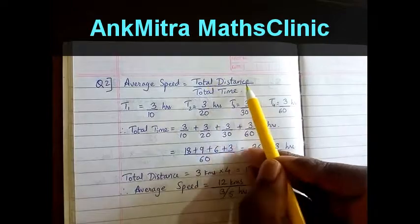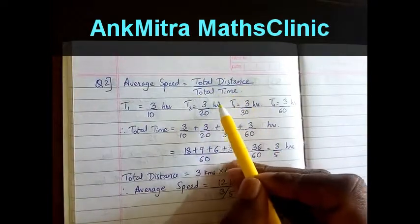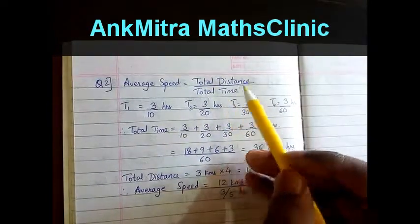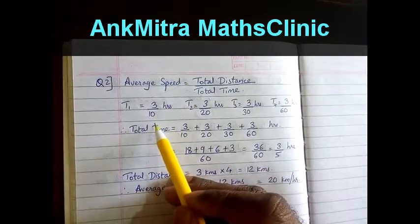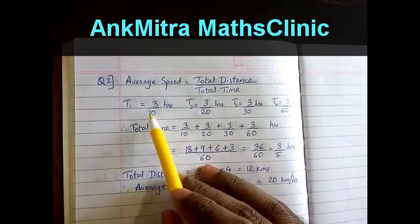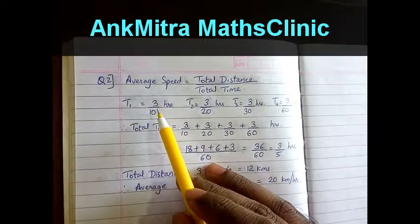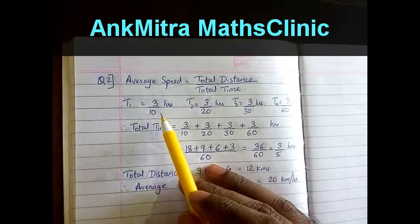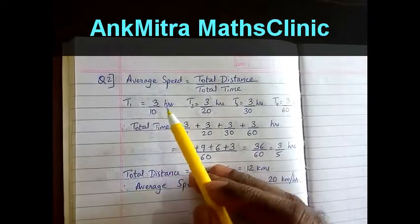In this case, the journey is split into four parts. The first part is three kilometers at the speed of 10 kilometers per hour, so the time required for the first part is t1, which is equal to distance upon speed.